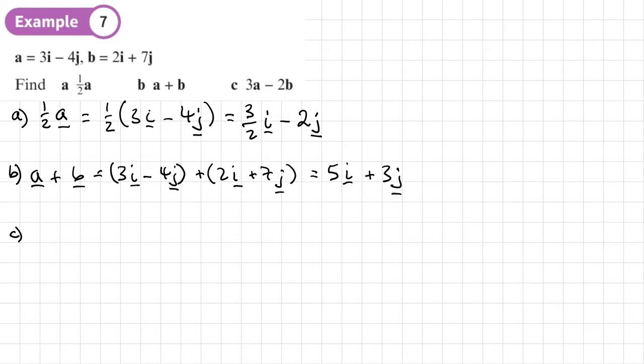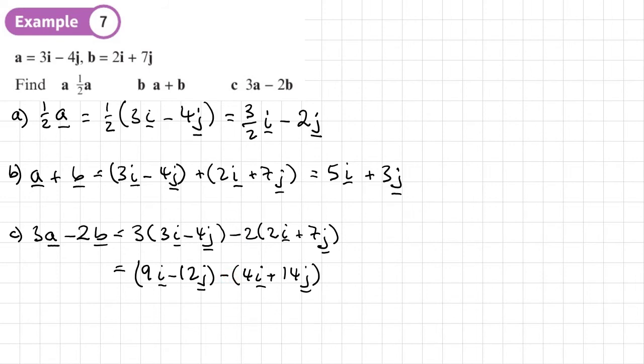And then lastly, part C, we have 3A, 3 lots of A minus 2 lots of B. So 3 lots of A, that's 3I minus 4J, minus 2 lots of B, that's 2I plus 7J. So first thing we're going to do is expand the brackets, just like algebra. So times both of these things here by 3. So we'll get 9I minus 12J. And then we're going to times everything here by 2. So we'll get minus 4I plus 14J. Now you could, if you wanted to, just times everything by negative 2. But then you'd have to change that to a plus. Just take care with that. So that will give us 9 minus 4, which is 5I. And then negative 12 minus 14 would be negative 26J.